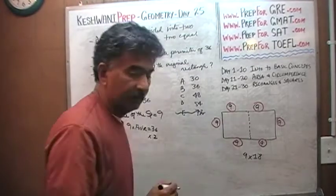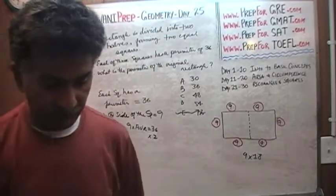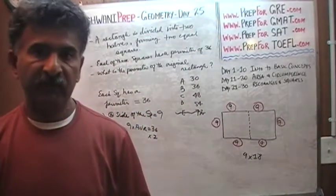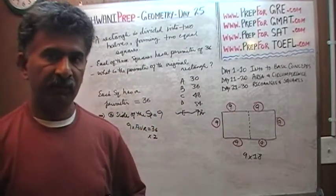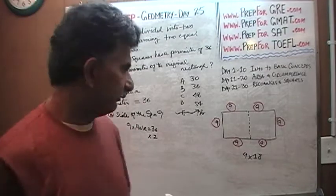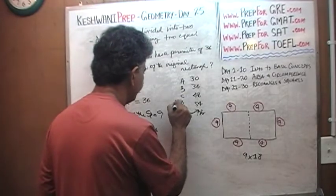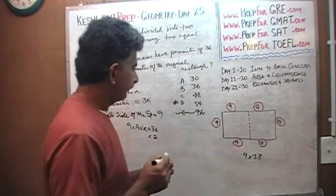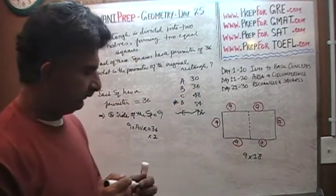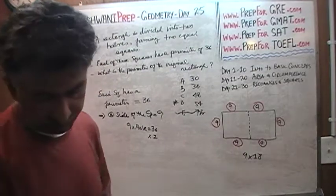9 times 6 — well, 9 times 5 is 45, and 45 plus 9 is 54. So the perimeter of the original rectangle is 54. Voilà, that's your answer.